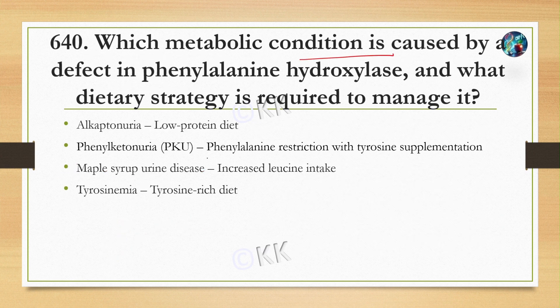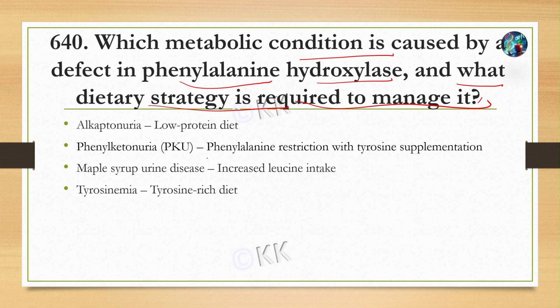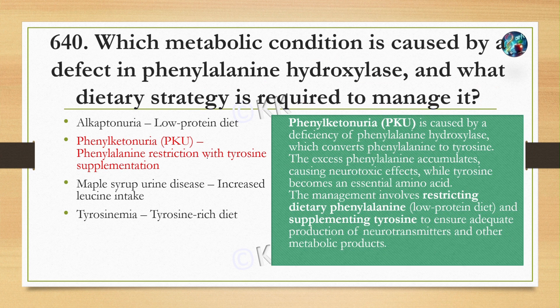The next question: which metabolic condition is caused by a defect in phenylalanine hydroxylase and what dietary strategy is required to manage it? Option A: alkaptonuria, low protein diet. Option B: phenylketonuria, phenylalanine restriction with tyrosine supplementation. Option C: maple syrup urine disease, increased leucine intake. Option D: tyrosinemia, tyrosine-rich diet. The correct answer is option B: phenylketonuria, phenylalanine restriction with tyrosine supplementation.